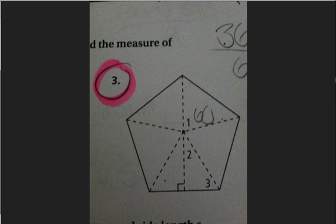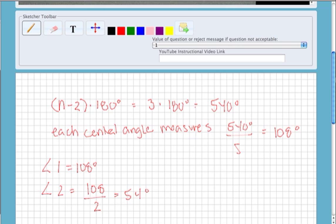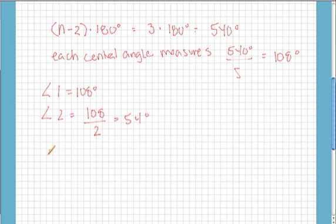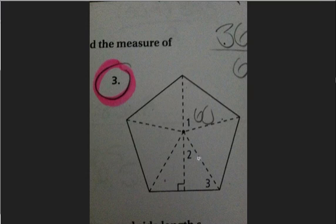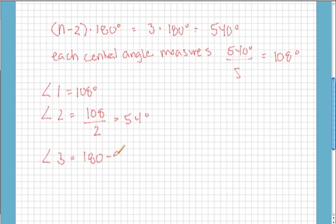Now let's figure out angle 3. Well, it looks like I know angle 2 and I know this angle right here. It's 90 degrees. We also know that the sum of the interior angles of a triangle is 180 degrees. So angle 3 is going to be 180 minus 90 minus 54, which will bring us to a grand total of 36 degrees. So angle 3 is equal to 36 degrees.